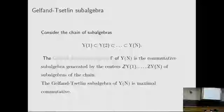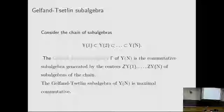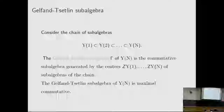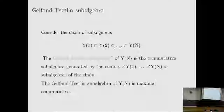If we consider the chain of sub-algebras of the Yangian, the Gelfand-Zeitlin sub-algebra gamma of the Yangian is the commutative sub-algebra generated by the centers of Y_1, the centers of Y_2, and the centers of Y_N.